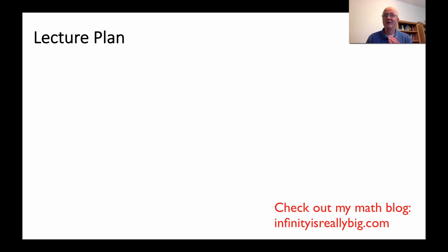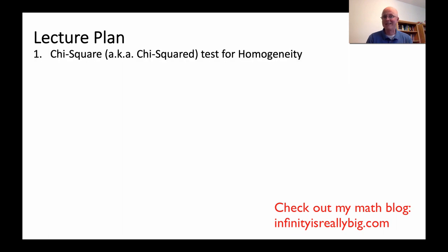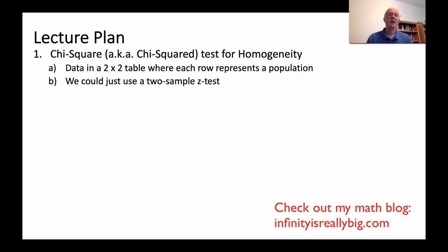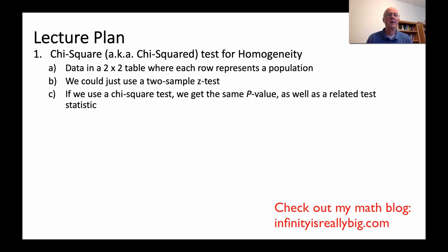Here's the lecture plan. This is called a chi-square test, also known as a chi-squared test. For homogeneity, we are going to have data in a two-way table — starting with a two-by-two table. We'll also discuss what to do with an R-by-C table with R rows and C columns, where each row represents random samples from a population. We could just do a two-sample z-test to compare proportions, but if we use a chi-square test, we get the same p-value and a related test statistic, with the advantage of generalizing to R-by-C tables to compare more than just two proportions.